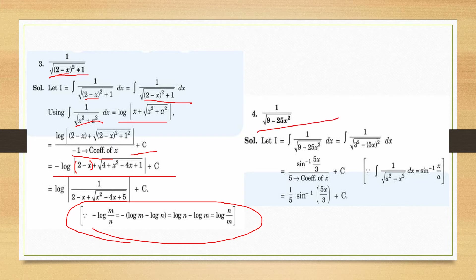Question 4: integral of 1/(9 − 25x²). Write as 3² − (5x)². Apply the formula for 1/(a² − x²) = sin⁻¹(x/a) + C, where x here is 5x and a is 3. Don't forget to divide by the derivative of 5x, which is 5. So the answer is (1/5) sin⁻¹(5x/3) + C.